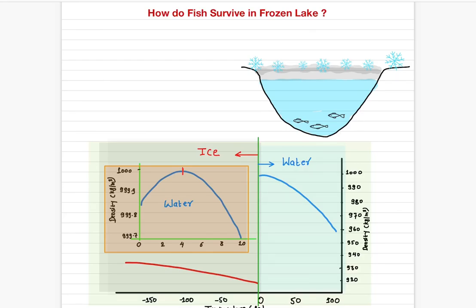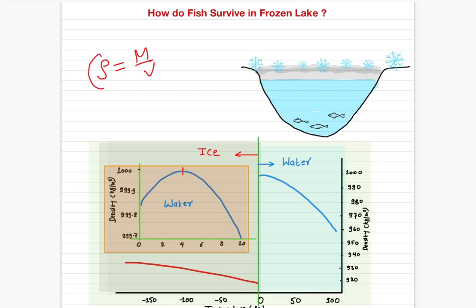But for water, between zero and four degrees Celsius, if you increase the temperature, instead of expanding, the volume actually decreases. As the volume decreases, the density increases — since density equals mass per unit volume. This is called the anomalous or peculiar behavior of water, and it's what allows aquatic animals to survive even inside a deep frozen lake.